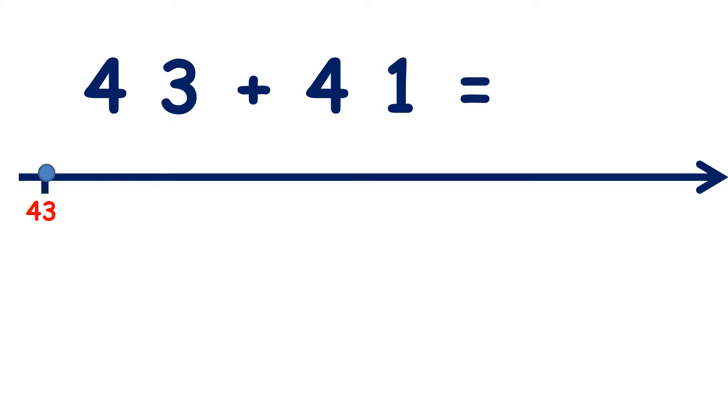We can add two-digit numbers on a number line. So here we have 43 add 41. So we start on 43, and we're adding 41, so we need to add four tens.